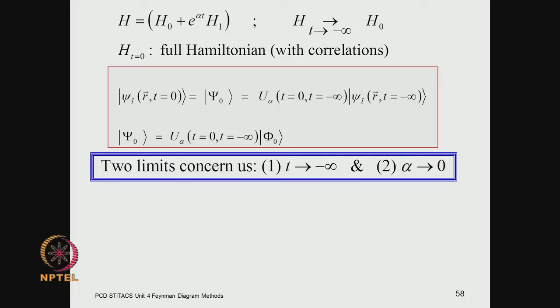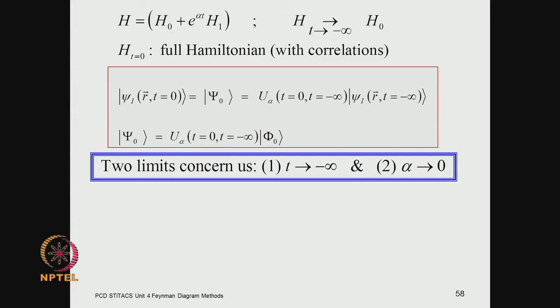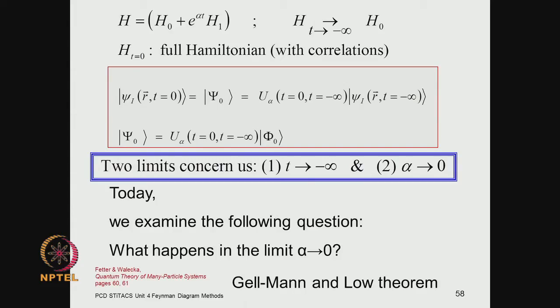As t goes to minus infinity, we have discussed how we get the solutions — that is just the unperturbed part of the Schrödinger equation, which we know how to handle. The question is what happens when you take the limit alpha going to 0, and this answer is provided by the Gelman and Lowe theorem of quantum theory. This is a very fascinating theorem.